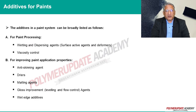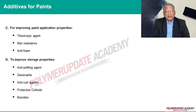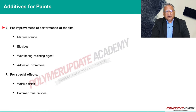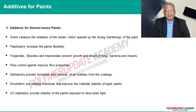The additives in a paint system can be broadly listed as follows: A - for paint processing; B - for improving paint application properties; C - for improving paint film properties; D - to improve storage properties; E - for improvement of performance of the film; F - for special effects. Let us now discuss additives used for solvent-based paints.